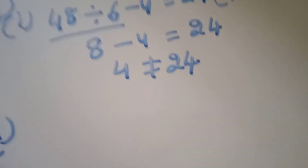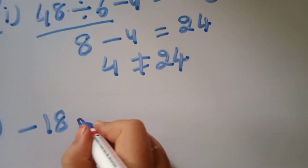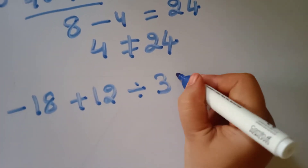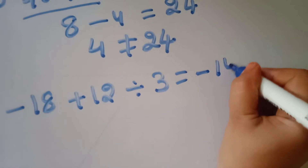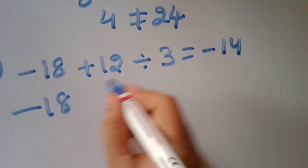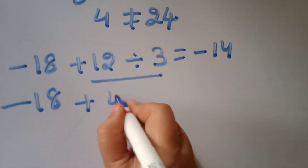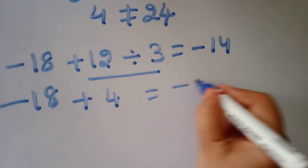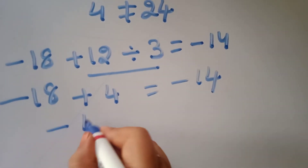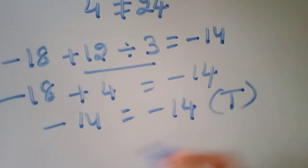Second one: minus 18 plus 12 is divided by 3 equals minus 14. First, divide: 12 divided by 3 equals 4. So minus 18 plus 4 equals minus 14. Minus 14 equals minus 14. This is true.